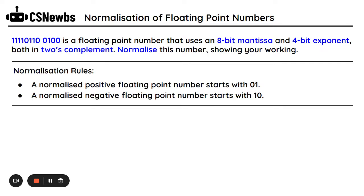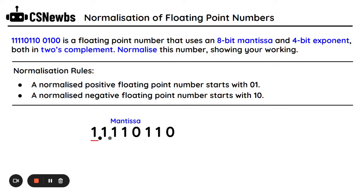Let's take a quick look at the normalization rules again. A positive floating point number needs to start with 0, 1 to be normalized, and a negative floating point number needs to start with 1, 0 to be normalized. I'm going to write out my mantissa and look at the most significant bit. The most significant bit tells me that this is a negative number. Therefore, to normalize this number, I need it to start with 1, 0.